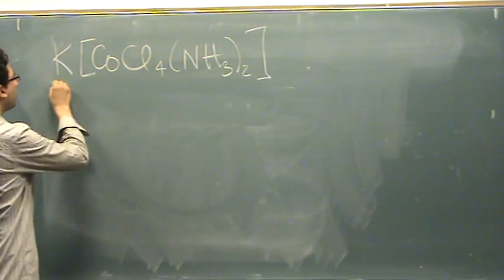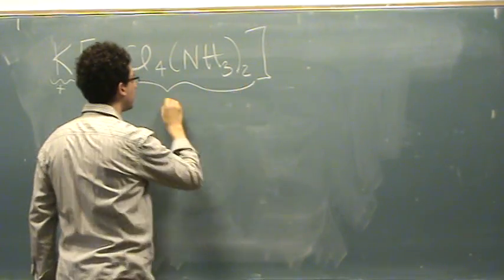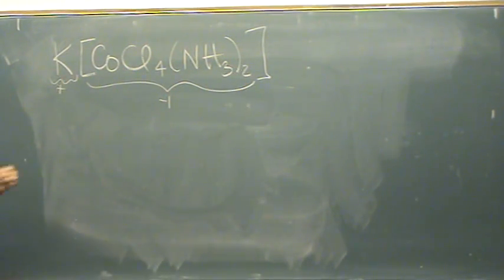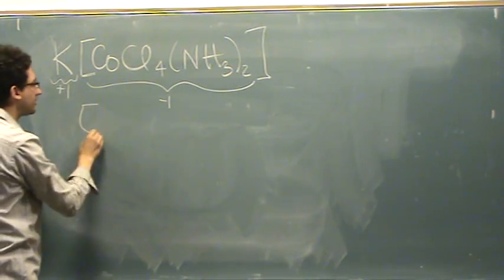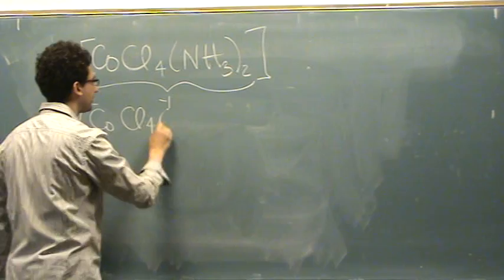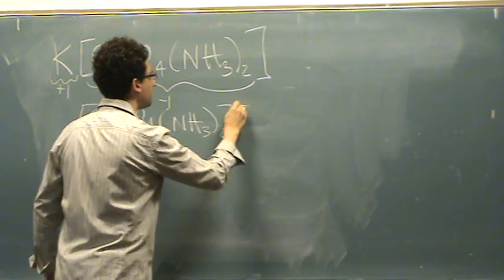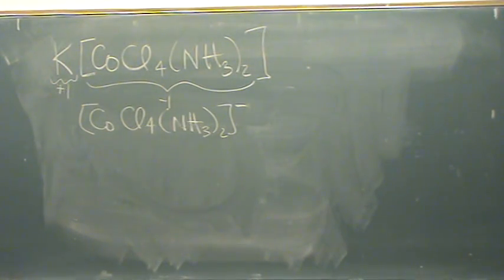Well, if you know your counter ion is plus one, everything there must be minus one. So now let's just write the thing in brackets like I had before, but I'll just rewrite it. So this is a minus one charge. Then what I encourage you to do: find the charge of every ligand.